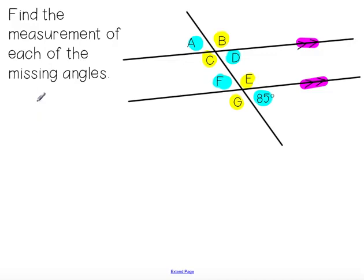Okay, so we can go ahead and mark in that angle A, angle D, and angle F, they're all 85 degrees because we know that they're the same as that angle in the bottom right-hand corner that we already know. So I'm just going to put those in there right now.